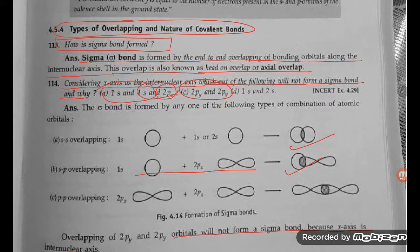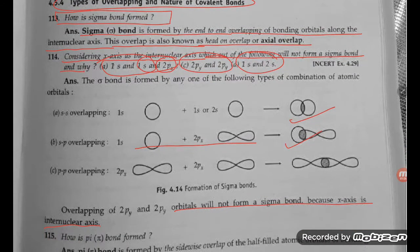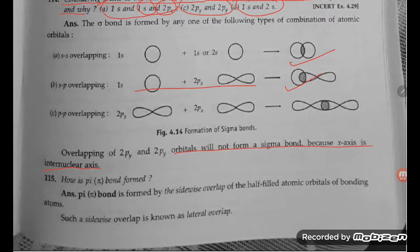So it is going to form a pi bond. 1s and 2s are capable of forming a sigma bond.